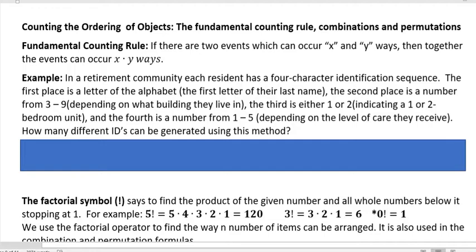It'll take me a couple of videos to get through all of that. In this first time we're talking about the fundamental counting rule, which says if there are two events which occur in X and Y ways, then together the events occur in X times Y ways.